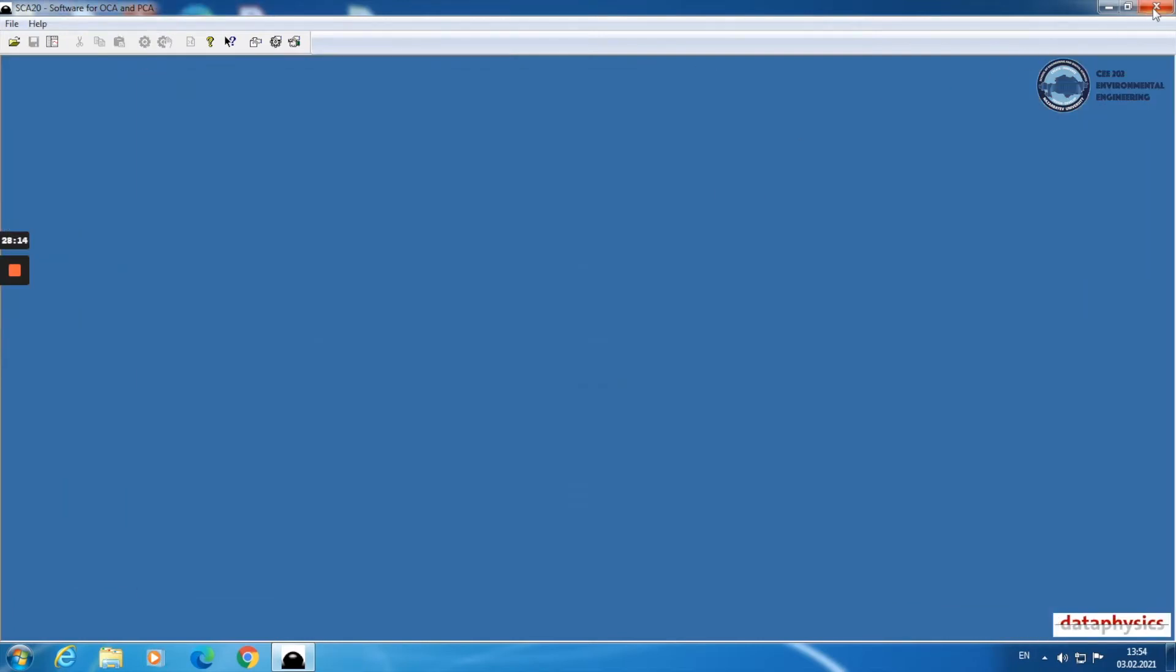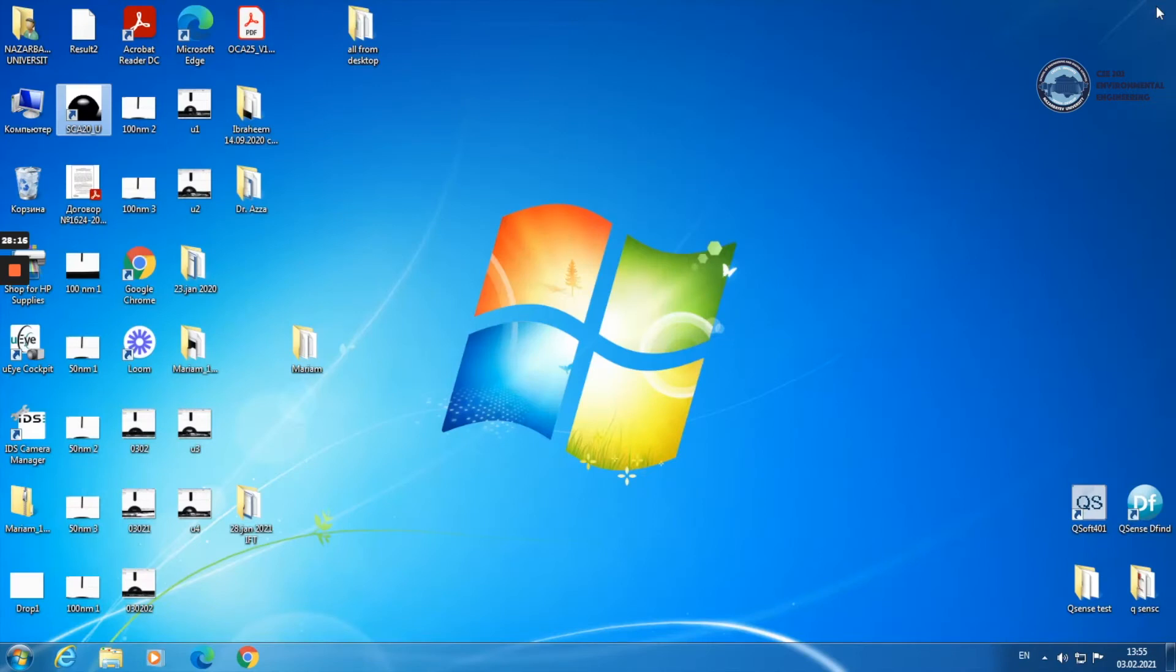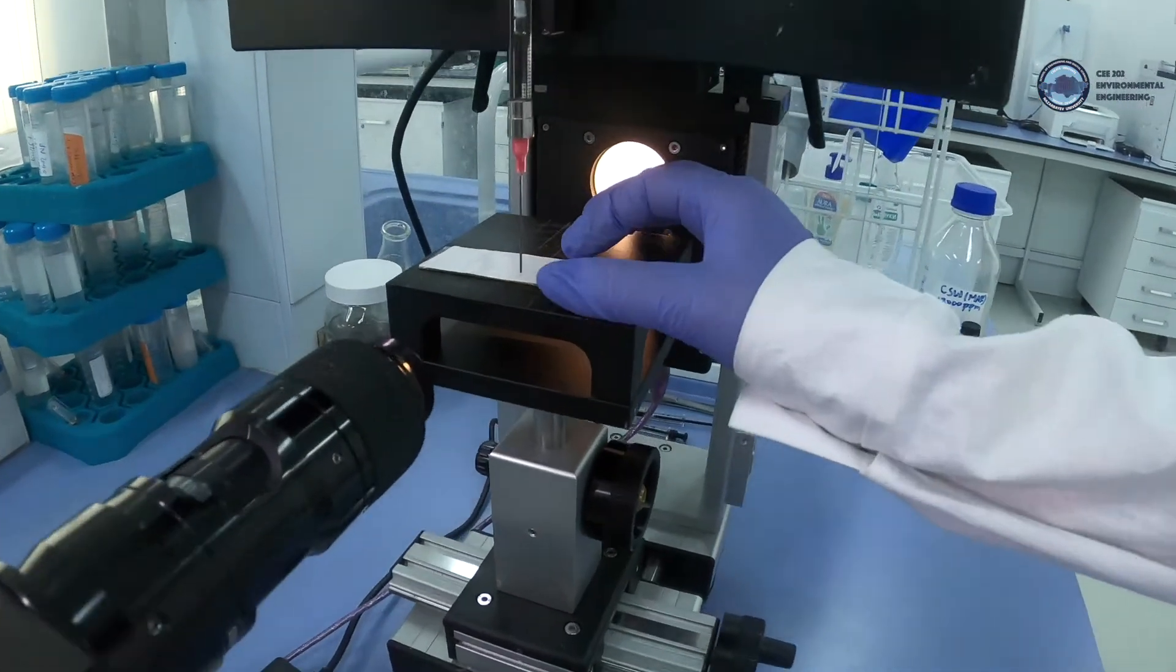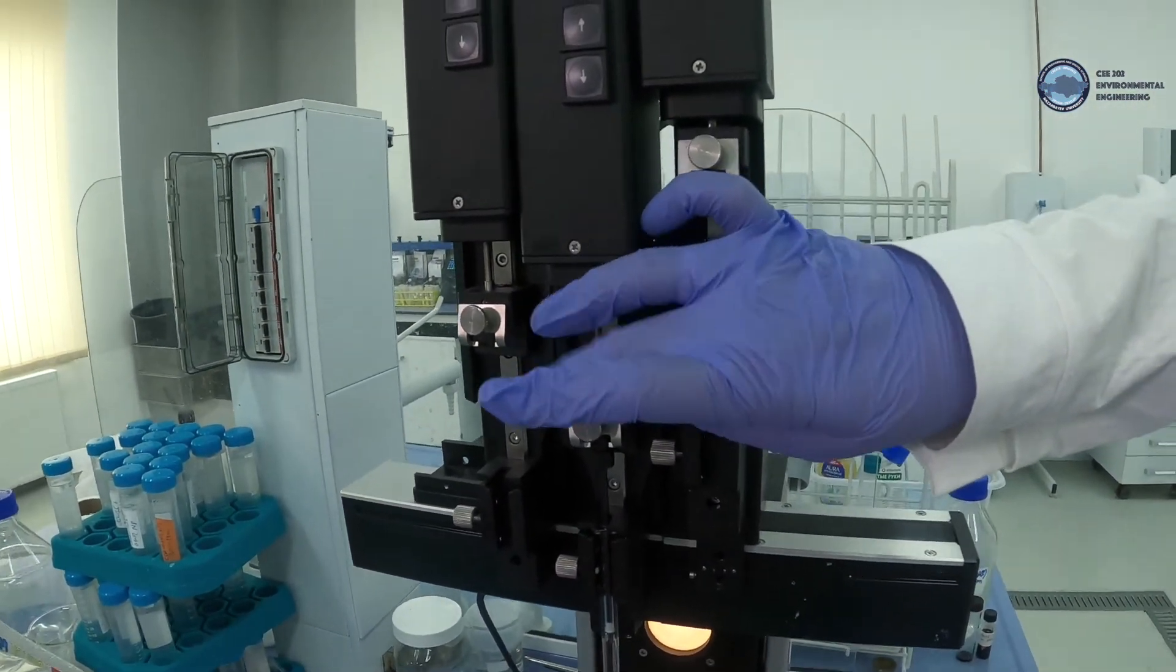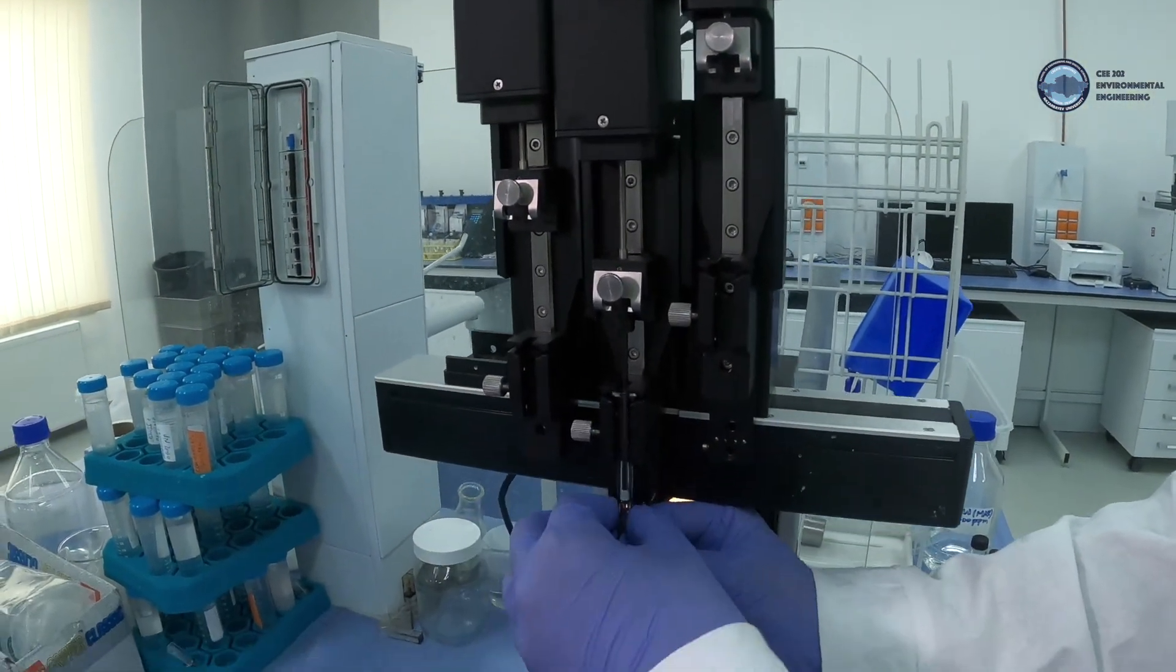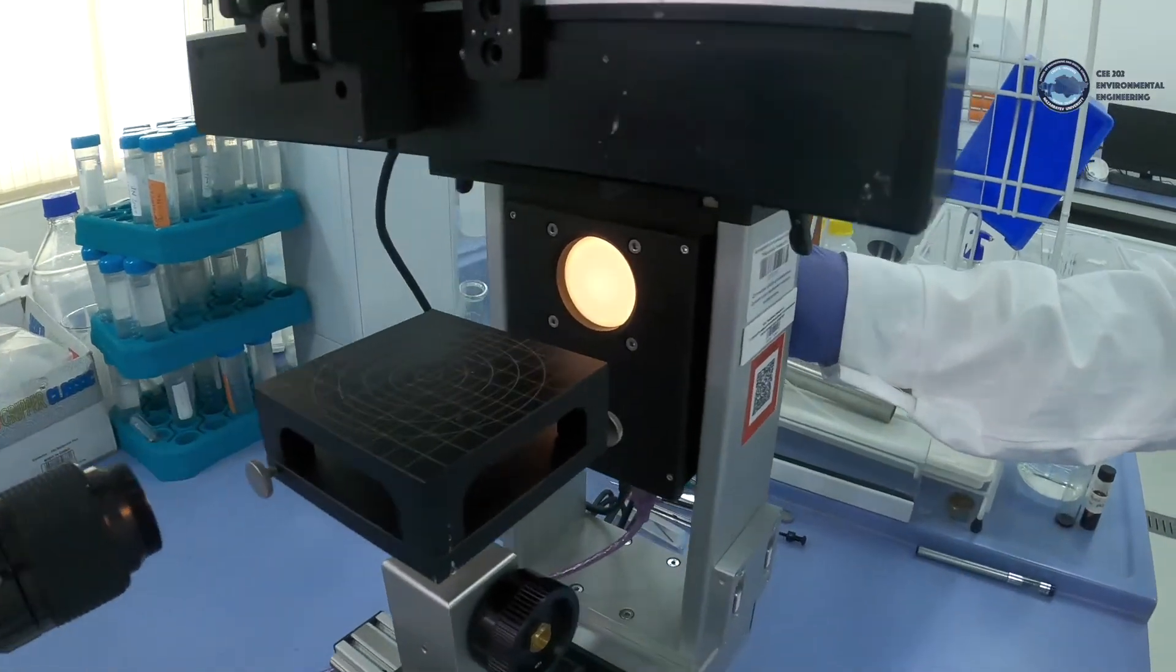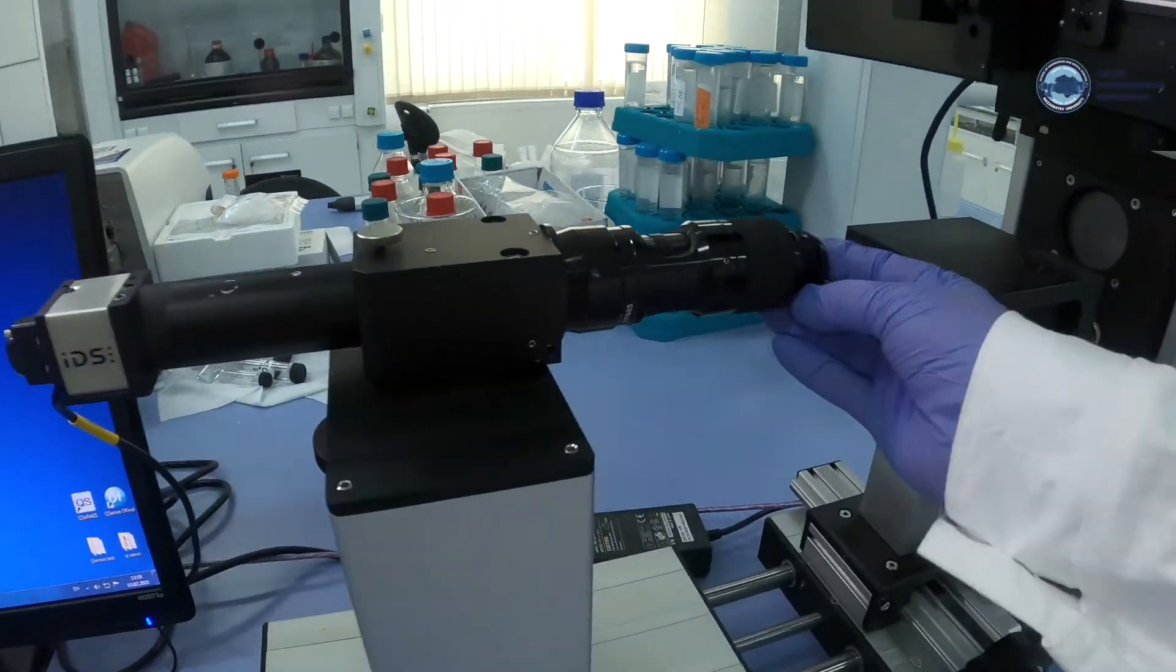After we finish all measurements, we close the program, take out our fouled membrane from the device, loosen the screws of the equipment to pull out the dosing syringe, switch off the light and close the objective.